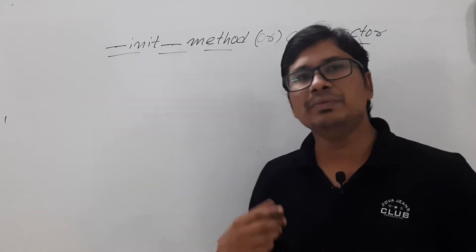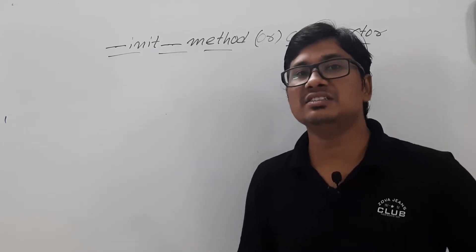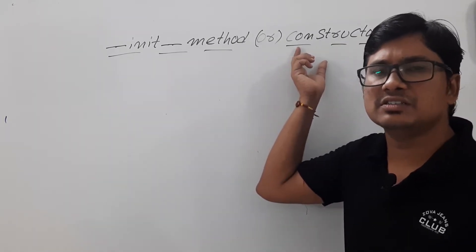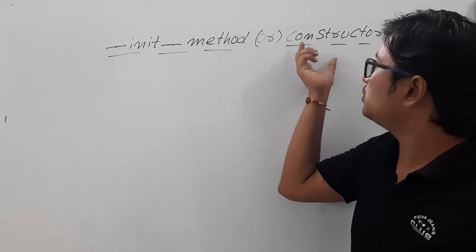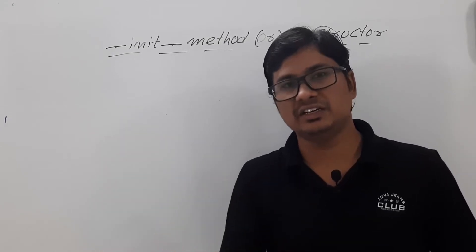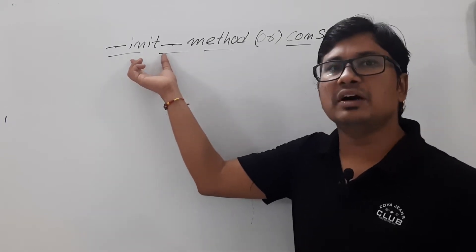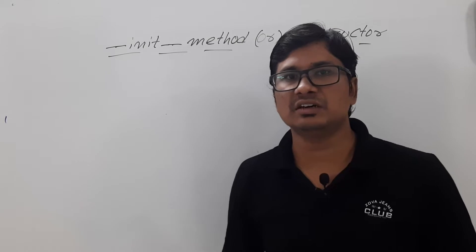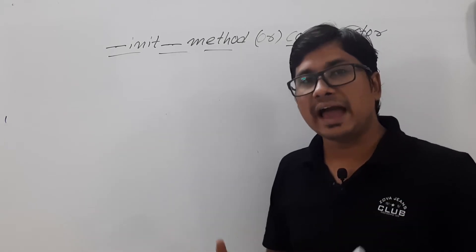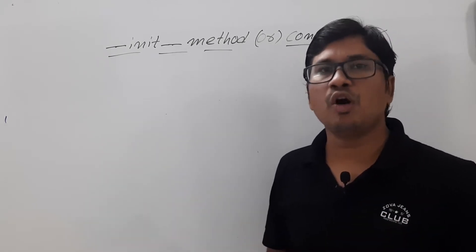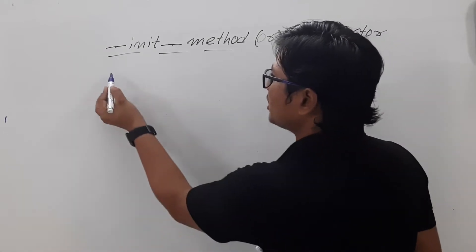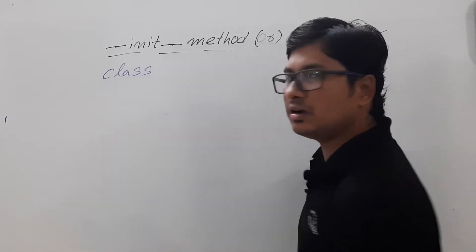The purpose of the __init__ method is to initialize the variables of an object — it is like a constructor. If you have studied C++ or Java, you would know that a constructor is used to initialize the object state. In Python, we have the __init__ method which initializes the variables of an object. Now let me discuss how to use and access the __init__ method and how to initialize the variables of an object.